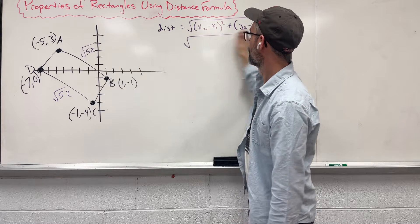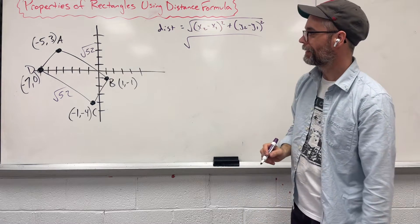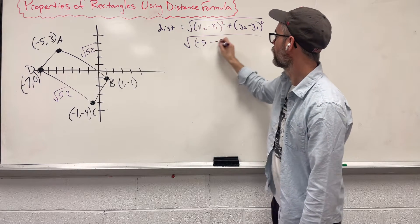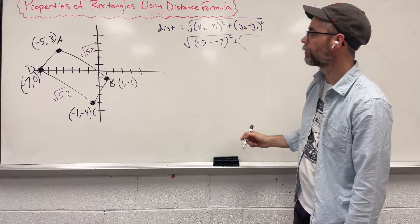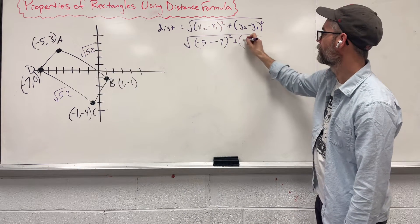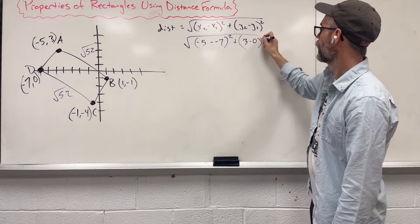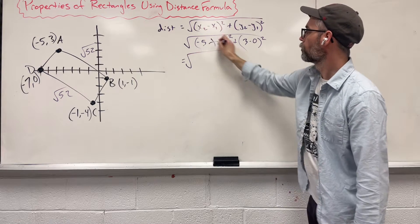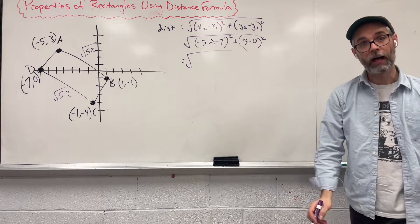Let's look at AD. Our x's, I'm going to say negative 5 minus negative 7, square it. Plus, we started with negative 5, let's start with 3. 3 minus 0, and then square that. Returns to the plus sign. We have 7 minus 5, which is 2, 2 squared gives us 4.